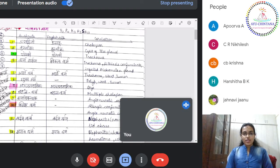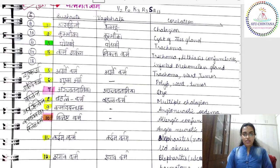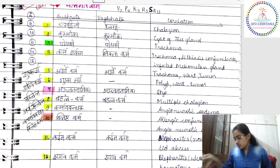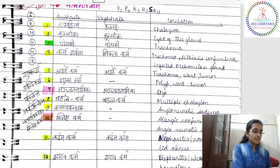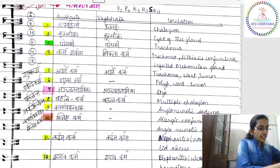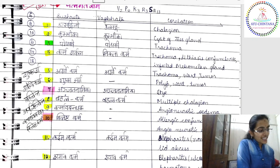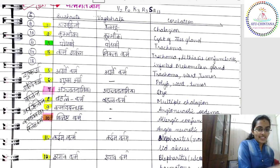I hope you all keep revising these things so that you will not forget them. Vartma Gata Roga — we started yesterday. Coming to the Vartma Gata Roga, there are 21, so it is difficult to understand all at once. We are taking it in divided doses, and keeping the Anupana as revising the previous class things.